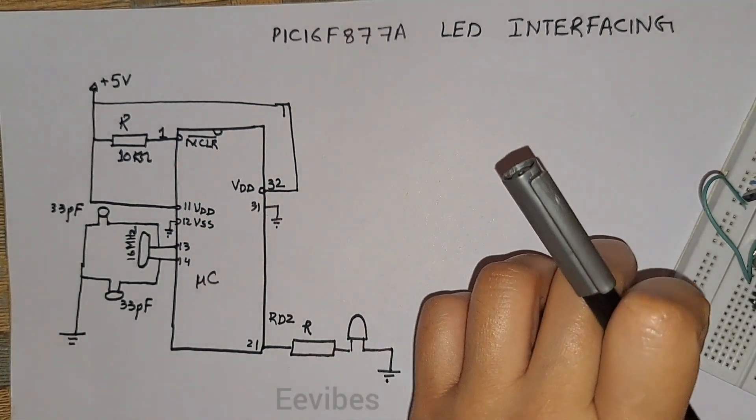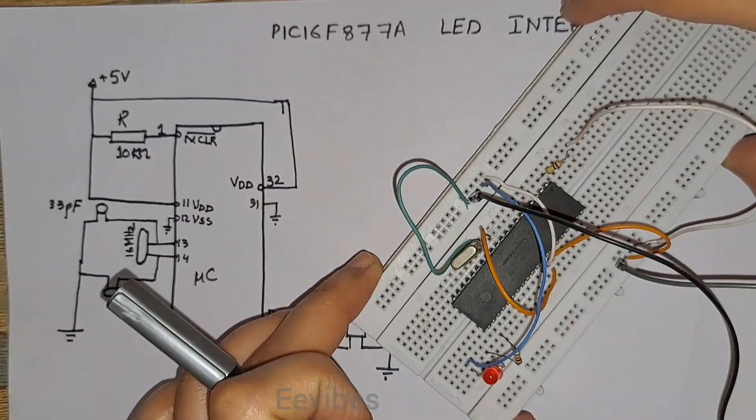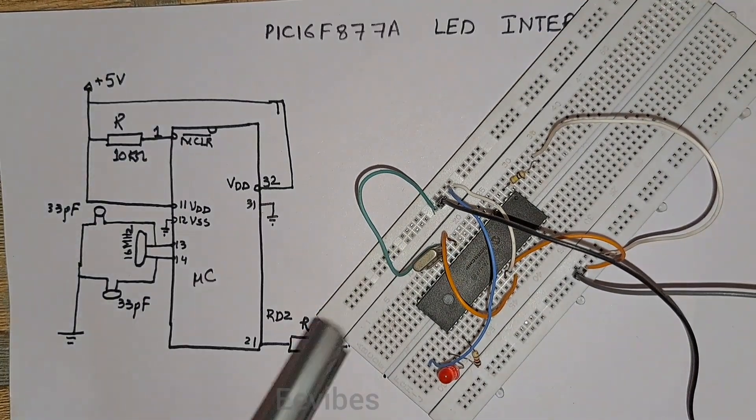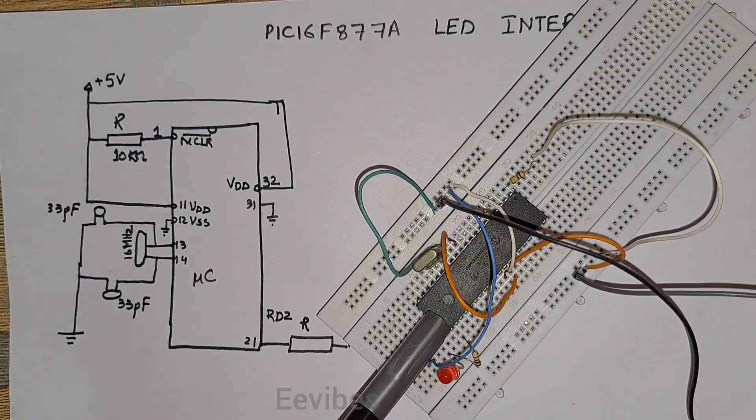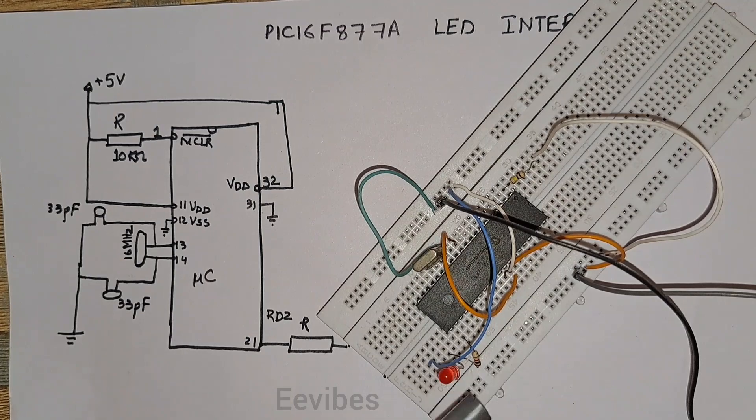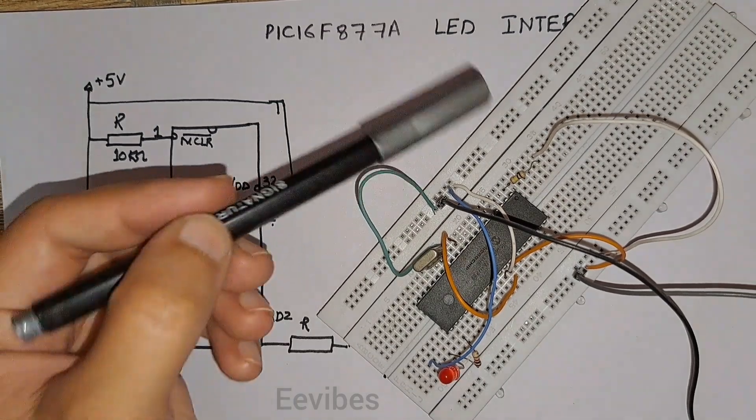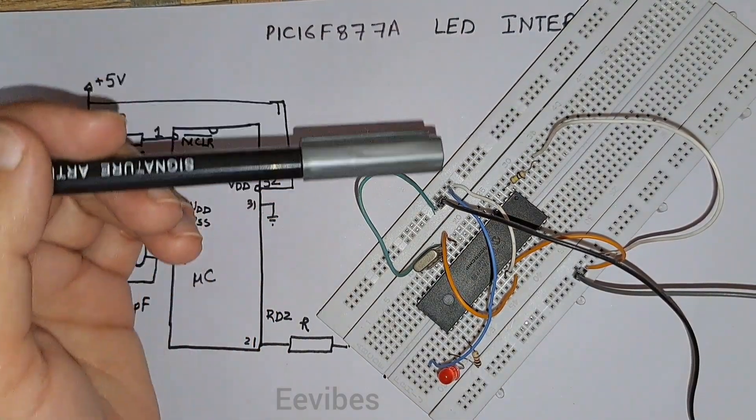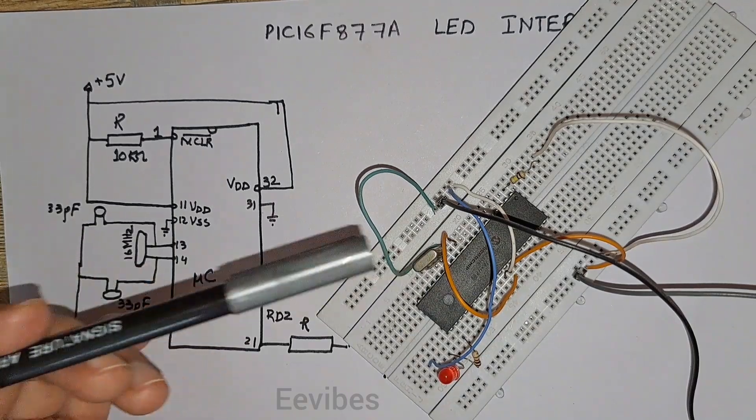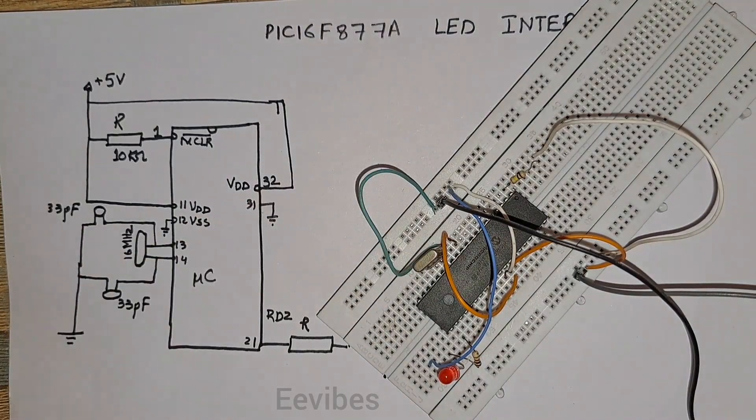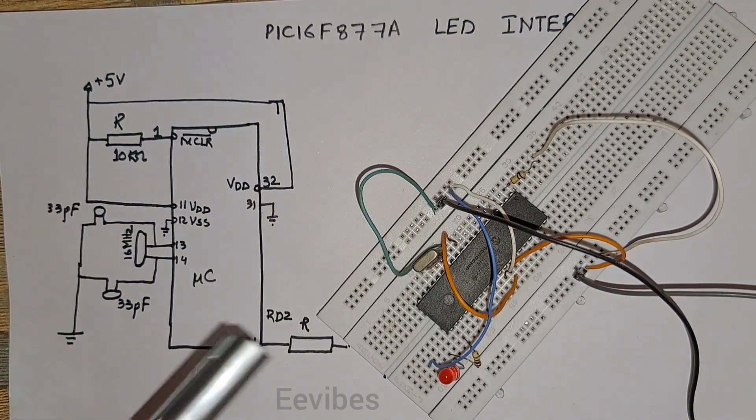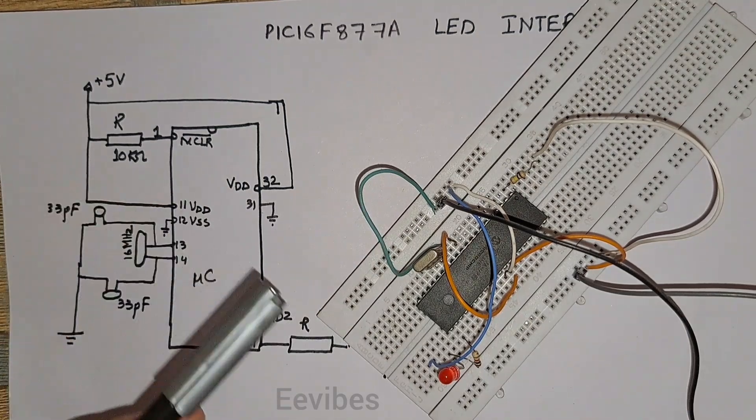You can see this is pin 21 of the PIC microcontroller and the LED is connected with a resistor. Similarly, here is the reset connection and the crystal oscillator. Right now you can see I have not used the capacitors because they were not available, otherwise it's preferable to use those capacitors.